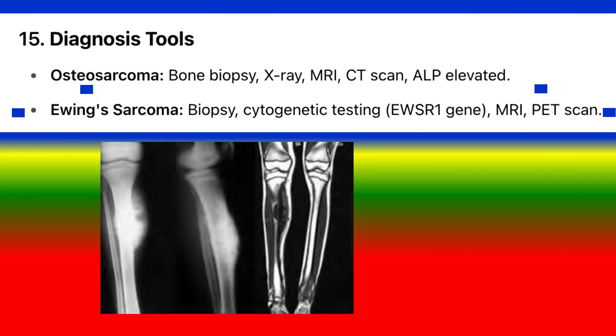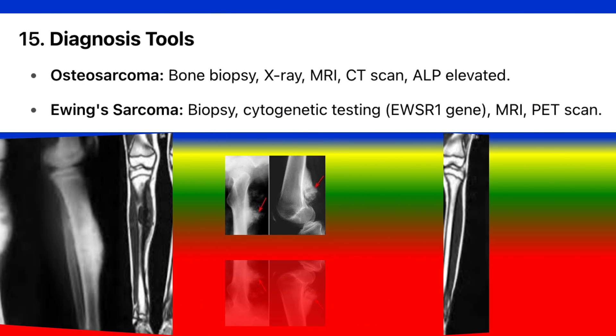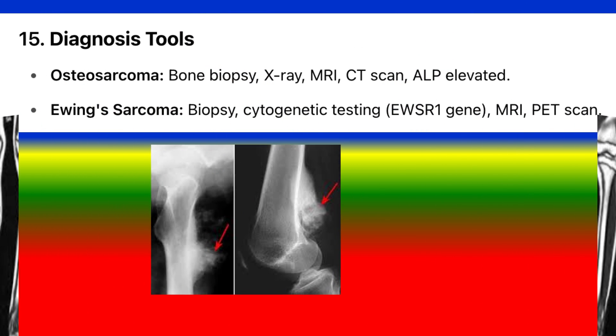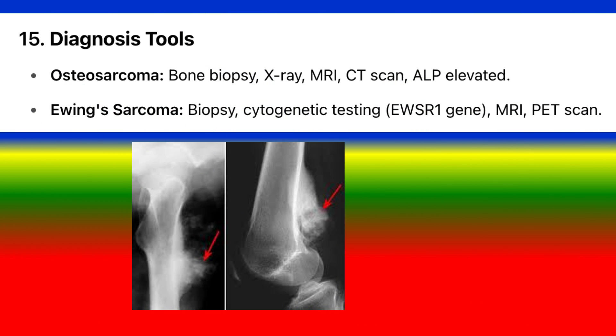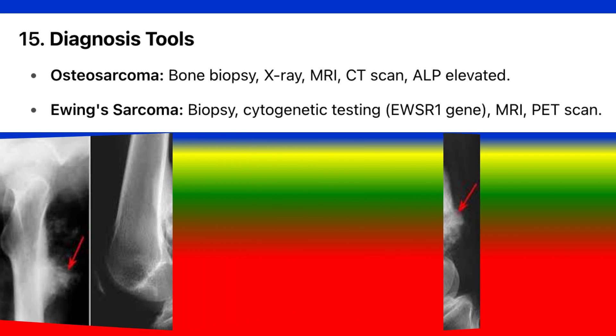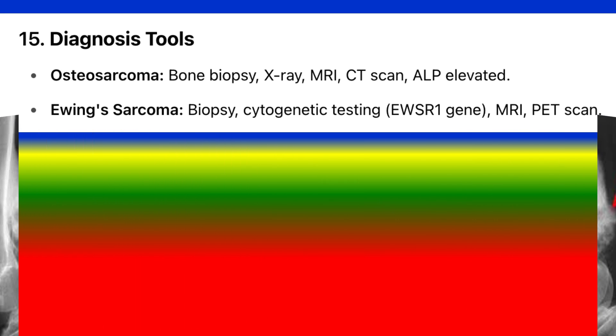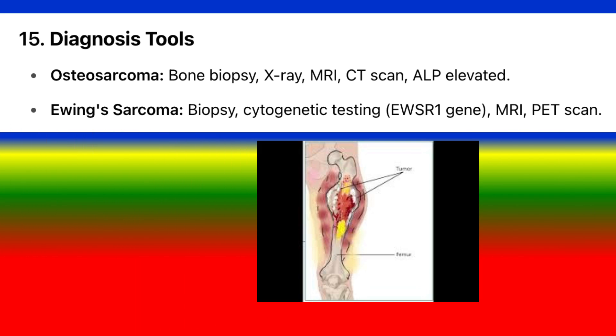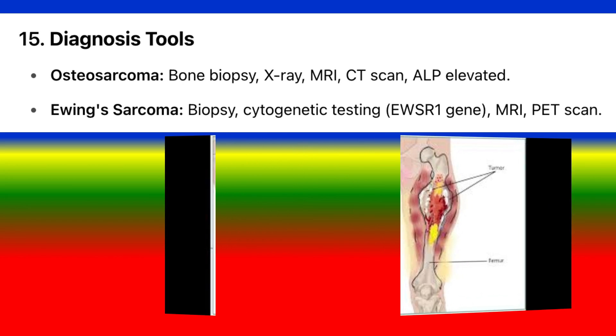15. Diagnosis tools. Osteosarcoma: bone biopsy, X-ray, MRI, CT scan, ALP elevated. Ewing's sarcoma: biopsy, cytogenetic testing for EWSR1 gene, MRI, PET scan.